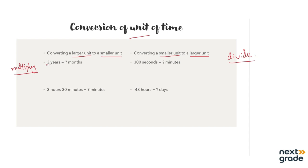First example: we are given 3 years and we have to convert into months. The year is a larger unit and months are a smaller unit, so which method do we apply? We are going to multiply. In one year, how many months are there?